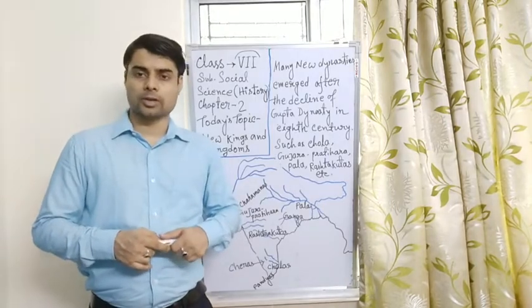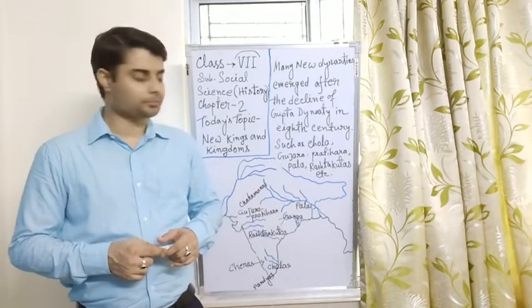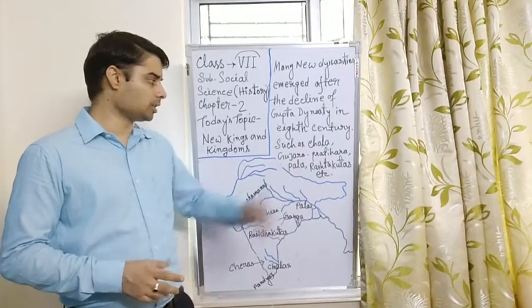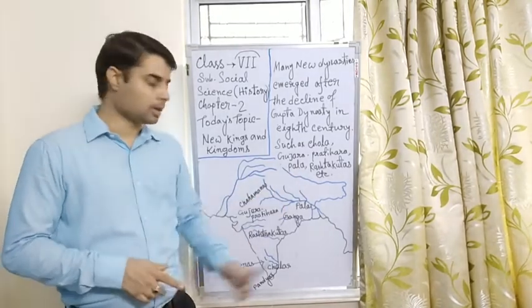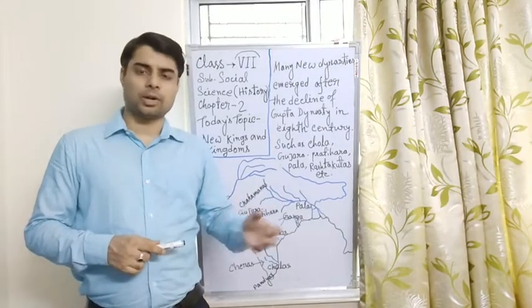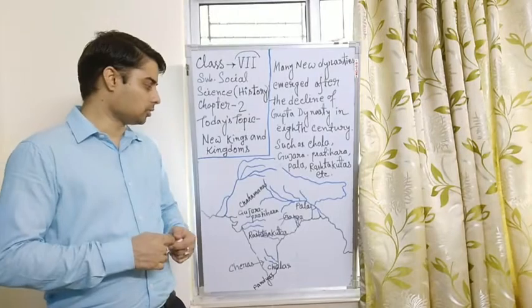Small kingdoms emerged in Indian sub-continent such as Chola, Gurjara Pratihara, Pala, Rashtrakuta and others also like Paramar, Chandels, those Paats also.